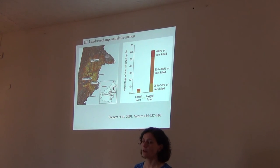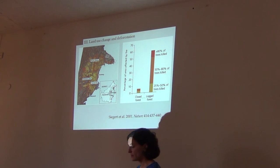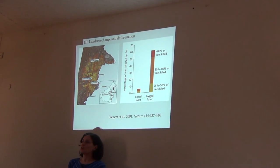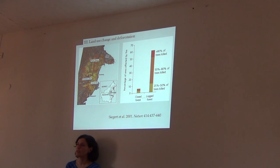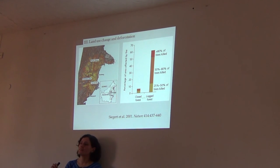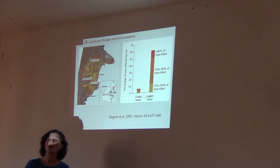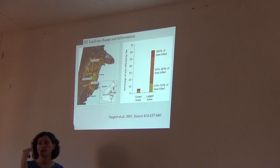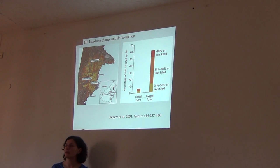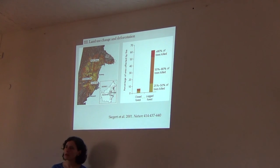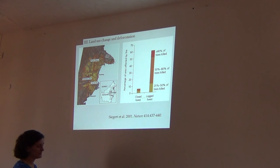Besides losing biodiversity with forest cover, another problem with fire is that as forests burn, we release CO2 into the atmosphere. Even careful logging can unfortunately have negative effects through these types of fires. The release of carbon dioxide through fires contributes to global warming, and global warming generates hotter, drier weather that expands the fire season.